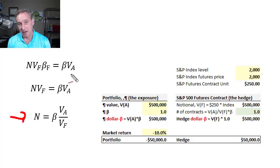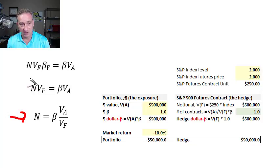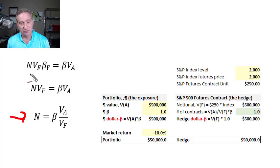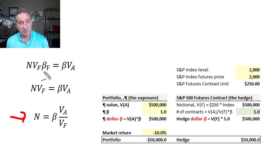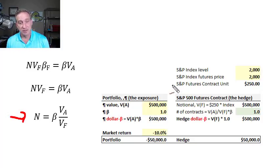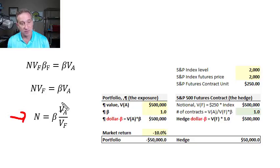If we wanted to neutralize the beta of that portfolio, all we would do is use short futures contracts with an exactly offsetting dollar beta. The dollar beta of the futures contracts would simply be the number of futures contracts times the notional value per contract multiplied by the beta of each contract. We're using S&P 500 index futures contracts, where we can roughly assume the beta is one, so that drops out conveniently.